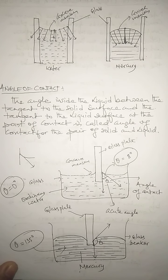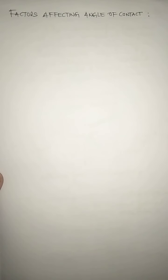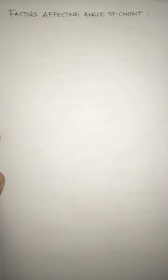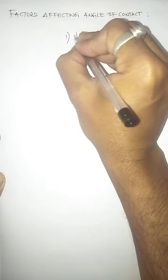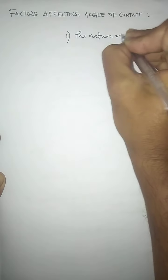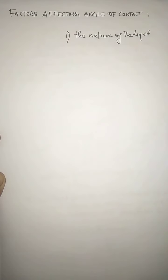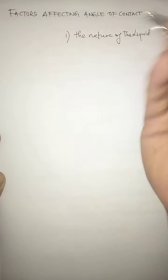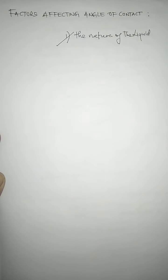The angle of contact can be measured for any pair of liquid and solid, but it is not the same for all pairs. There are certain factors that affect the angle of contact. The first factor is the nature of the liquid. Angle of contact is not the same for all liquids — as we saw with water and mercury, their angles of contact differ. Even if water has impurities, the angle of contact changes.